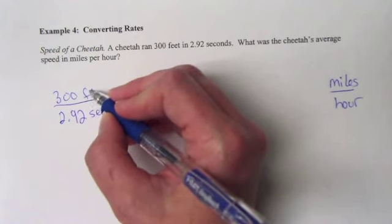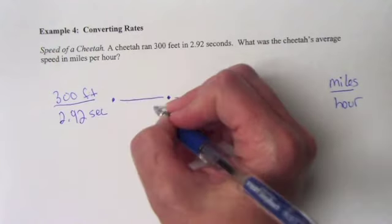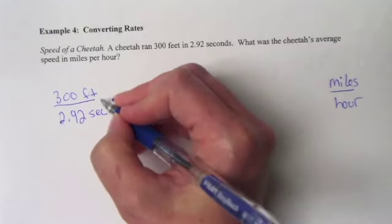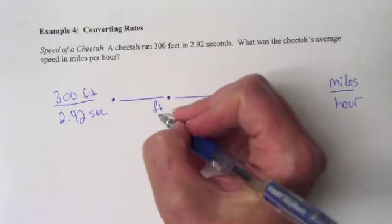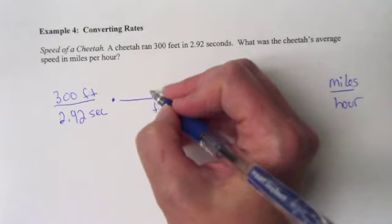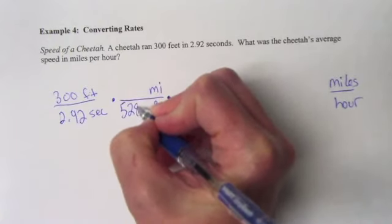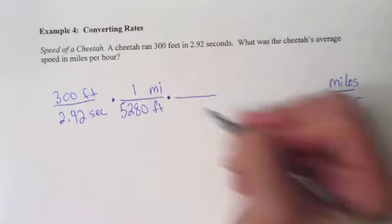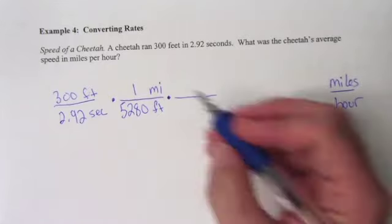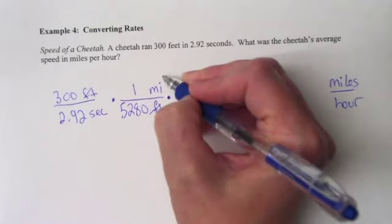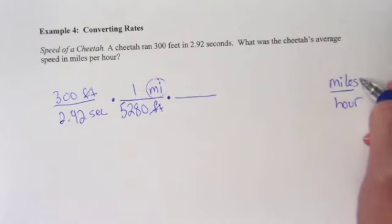And then these will cancel each other out. So we're going to go from feet right to miles. There's 5,280 feet in a mile. So I've set up that unit conversion. My feet will cancel and I'm left with miles, which is what I want in the end. So I'm done with distance.